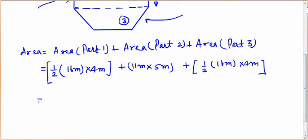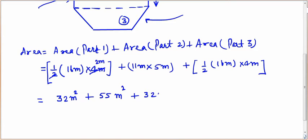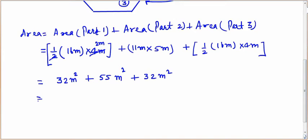Simplifying: half into 16 into 4 gives 32 square meters for the first trapezium. The rectangle area is 11 into 5 equals 55 square meters. The third part is also 32 square meters. Adding all three: 32 plus 55 plus 32 equals 119 square meters. So the area of this octagonal surface is 119 square meters. This question is completed.